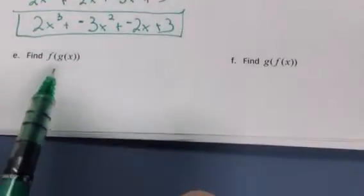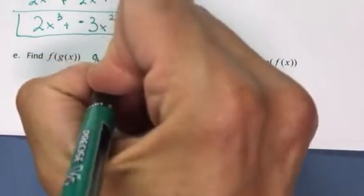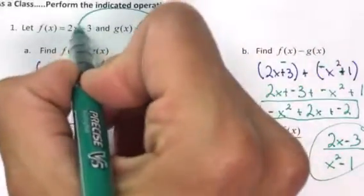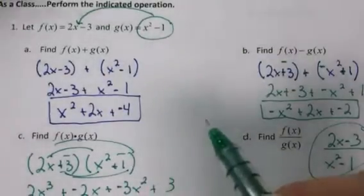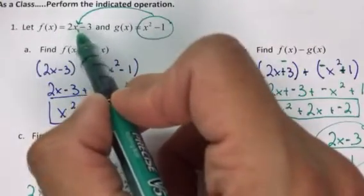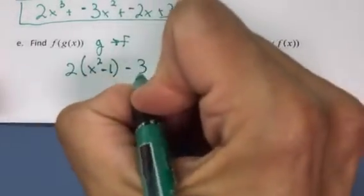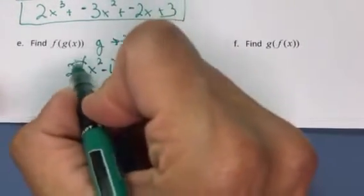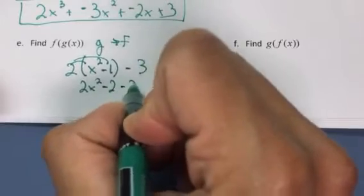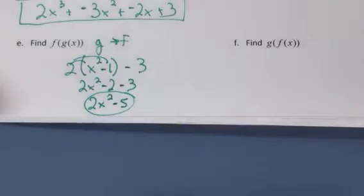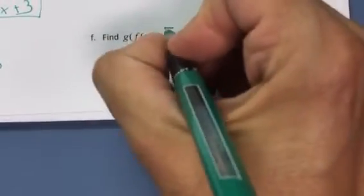For composite functions: f∘g means g is going into f. All of g goes in where the x is in f. Where x was multiplied by 2, now 2 multiplies all of g(x), so you get 2(x² - 1) - 3. Distribute to get 2x² - 2, then subtract 3 to get 2x² - 5.